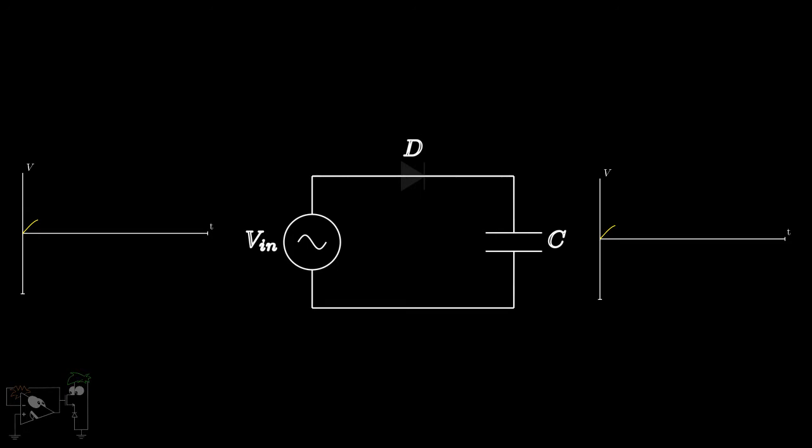Now, when the input starts decreasing, the diode becomes reverse biased. This is because the capacitor is charged to the peak value. Hence, the diode stops conducting and the capacitor holds this peak value.